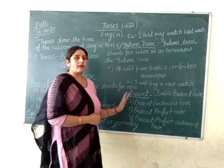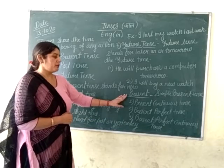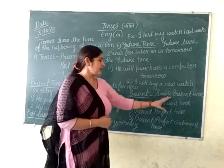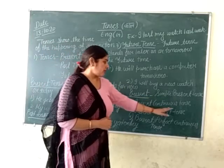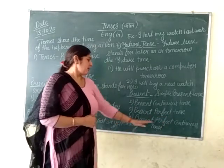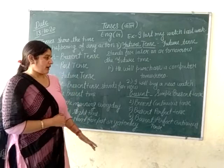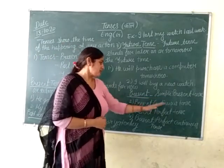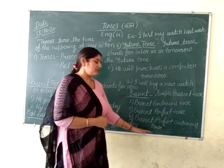Present, past and future — these three tenses are each divided into four parts. Present has: simple present tense, present continuous tense, present perfect tense, and present perfect continuous tense. Past has: simple past, past continuous tense, past perfect tense, and past perfect continuous tense.